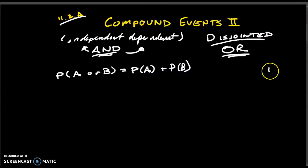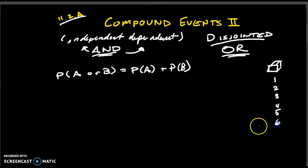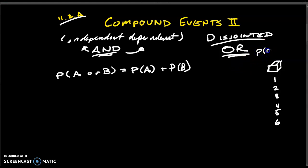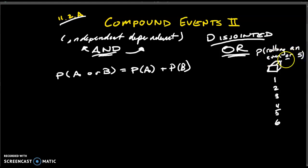If that's a little confusing, think about this die. We have a six-sided die with six possible options. If you roll it, you can get a one, two, three, four, five, or six. Now let's say I asked you for the probability of rolling an even or a five. You see that word 'or' is in there now. So what is the probability of rolling an even or a five?